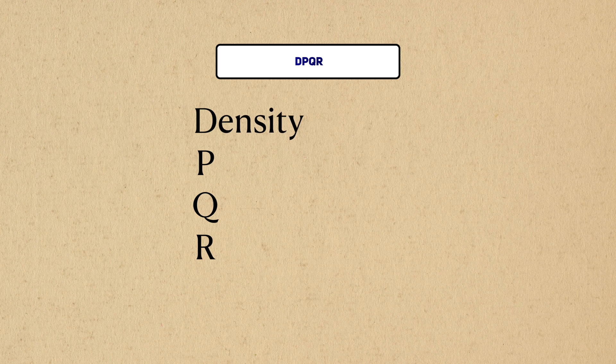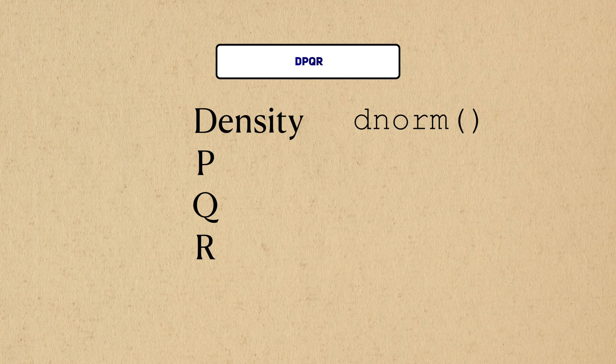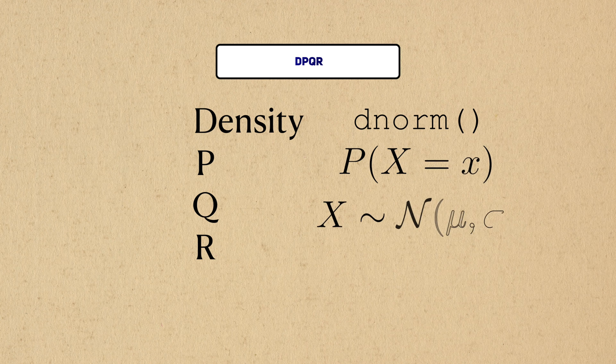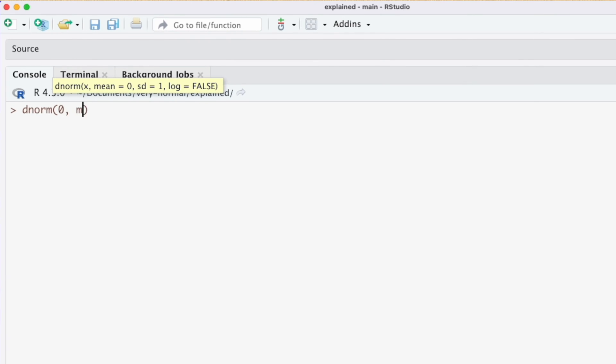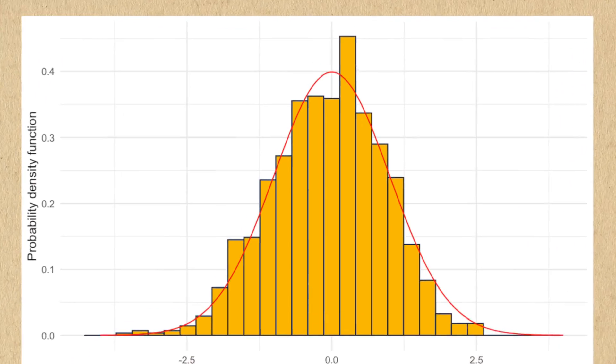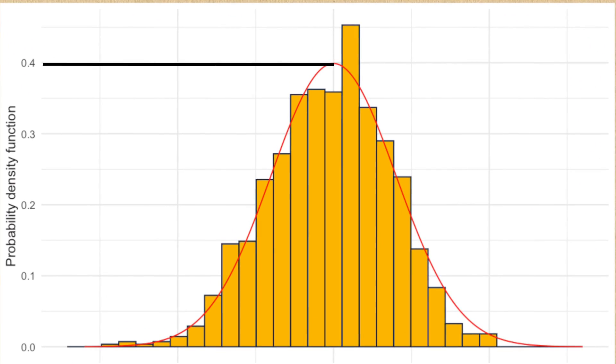d stands for density. So the dnorm function will give us the probability density for a normal distribution of a given mean and standard deviation. If I calculate the probability density of observing the average value in a standard normal, I get about 0.398. If I compare that to the actual distribution, we can see that it matches up.